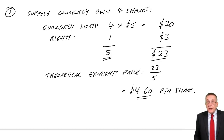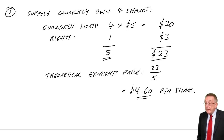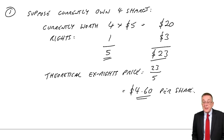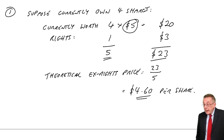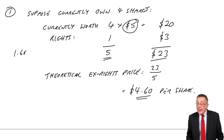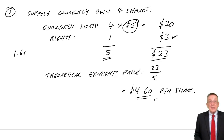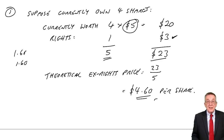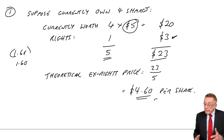That's the theoretical price — in theory you should be worth neither more nor less. Your existing shares were worth $5 and are now worth $4.60 — you've lost $0.40 per share, so $1.60 on four shares. But you paid $3 for a new share now worth $4.60 on the stock exchange, gaining $1.60. Net effect: you're no better off and no worse off.